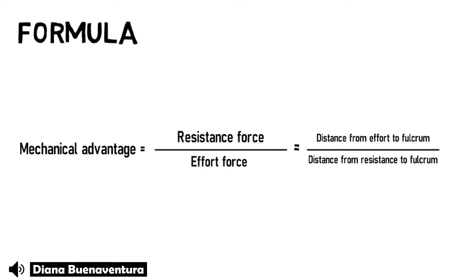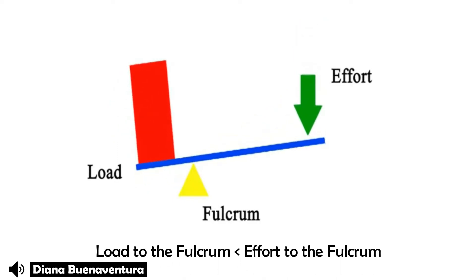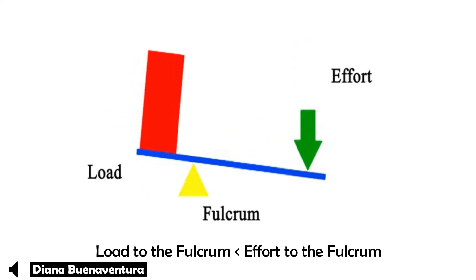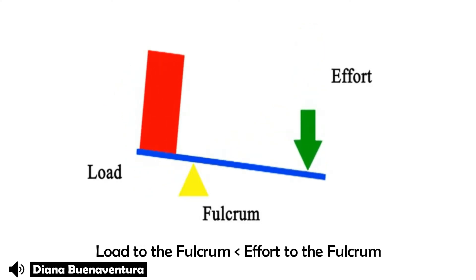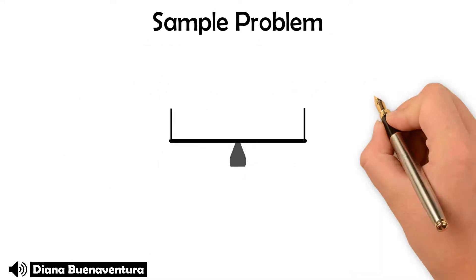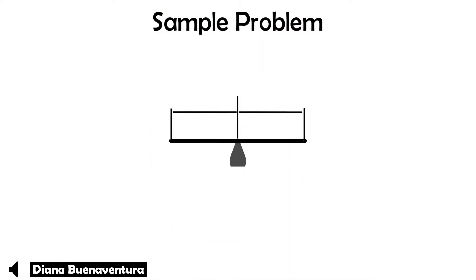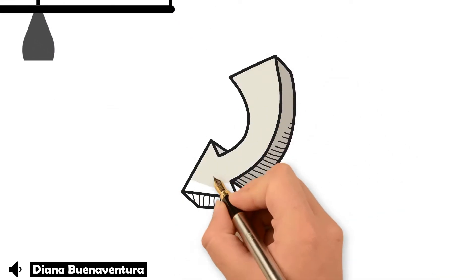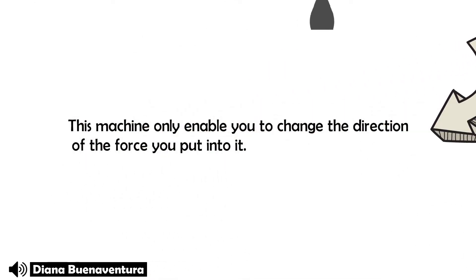So how do we know when there is mechanical advantage? It happens when the distance from the effort to the fulcrum is greater than the distance from the load to the fulcrum. To move an object with small effort, you need a long distance from the effort to the fulcrum and a short distance from the load to the fulcrum. Mechanical advantage tells you how much the machine will multiply any force you put into it. If the effort side is 2 meters and the load side is also 2 meters, this lever multiplies force by 1, meaning it only enables you to change the direction of the force.